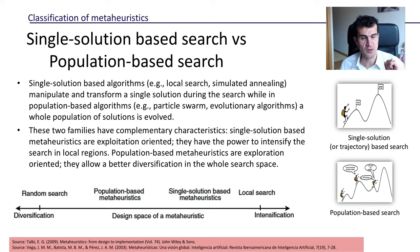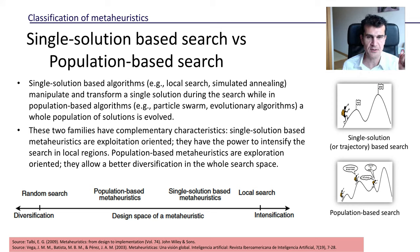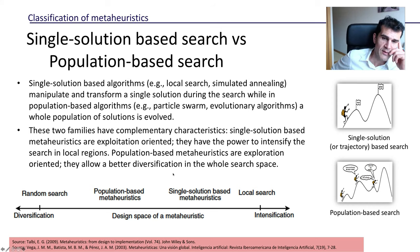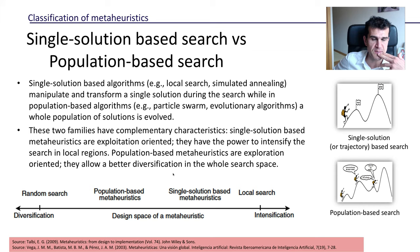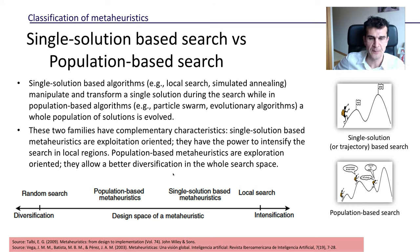Crucially, in population-based algorithms the hikers may exchange information — one of them may say 'this looks really promising, you should come and explore or exploit this region.' As you may guess, population-based meta-heuristics tend to use more explorative approaches, exploring a wider range of the search space, while single-solution based meta-heuristics focus more on intensifying the search — they are more oriented toward exploiting solutions rather than exploring broadly.